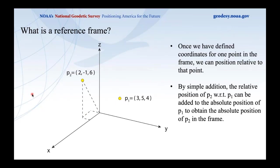This is the general mode of operation at NGS and for the surveying community. An official organization like NGS, the IGS, or the IERS assigns official coordinates to a set of reference points. They publish those coordinates, and then the surveying and earth science communities use those published positions to assign self-consistent coordinates to their own points of interest — all within the defined frame.